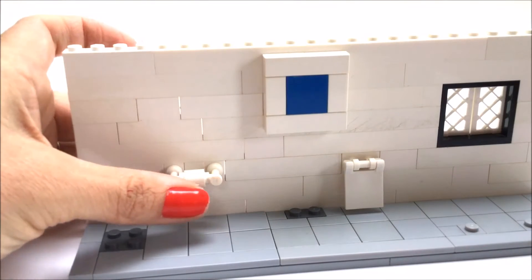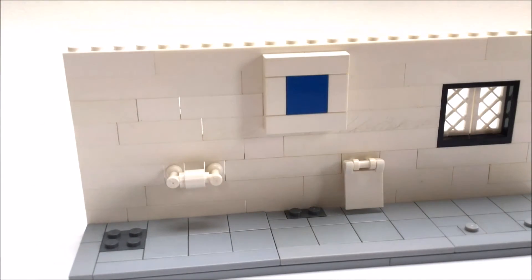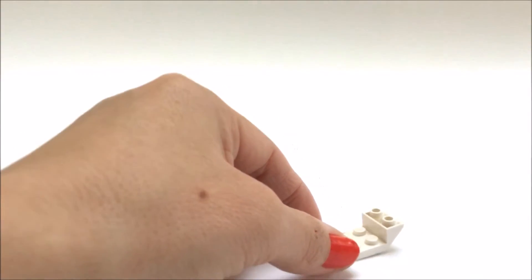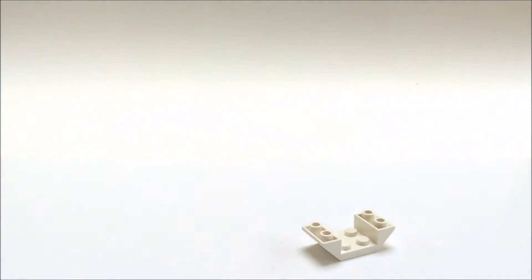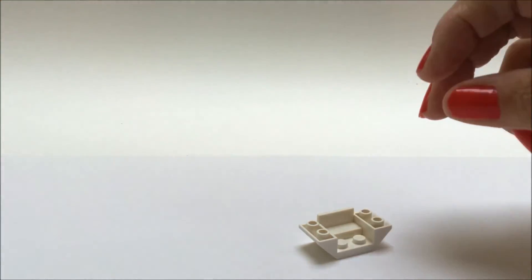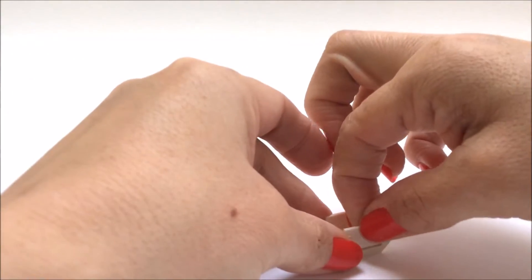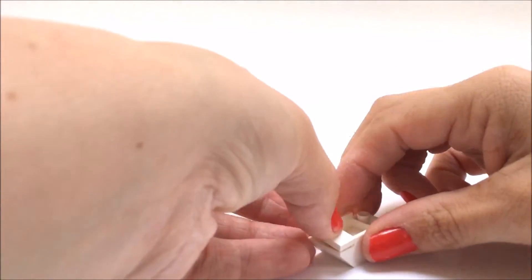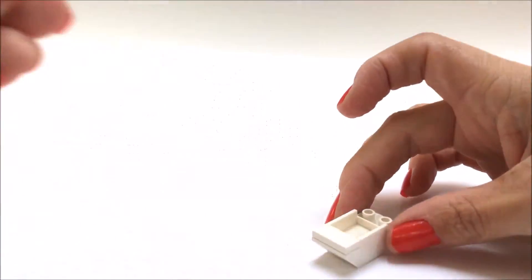To make our toilet we're going to begin with this brick here and onto the sides we're going to add these 2x1 tiles with sides. Onto the front a 2x1 tile and that creates the toilet bowl.